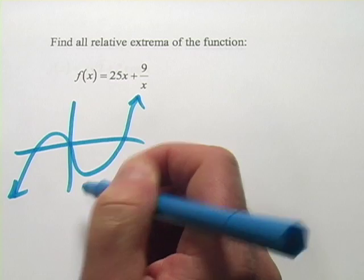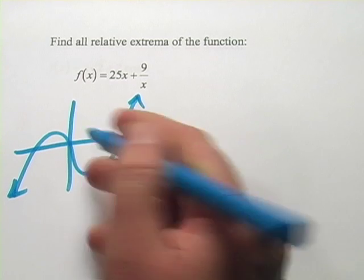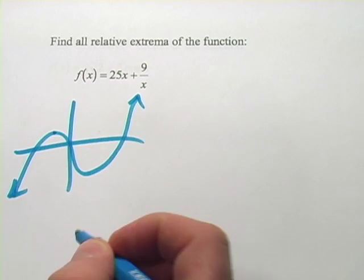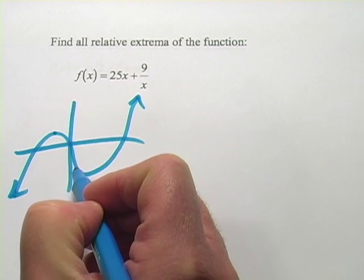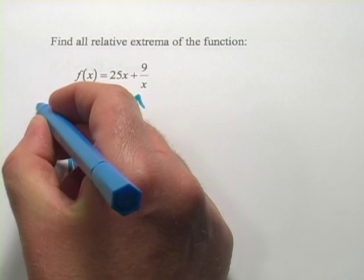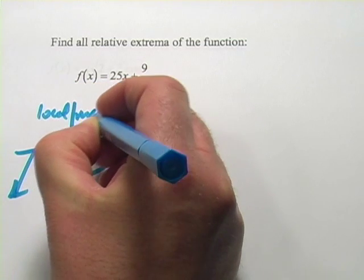But it also has a local max and a local min. So this point right here at the top of this little hill, if you look to the left, you're going downhill. If you look to the right, you're going downhill. So this is what we call a local maximum.